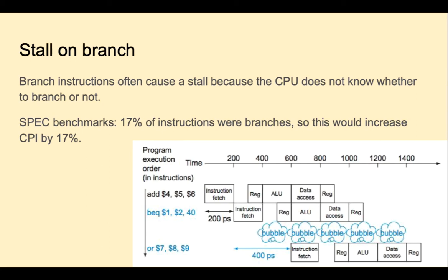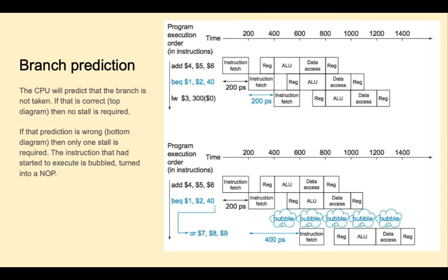Branch instructions often cause a stall. In the spec benchmark programs, 17% of instructions were branches. So this would increase CPI by 17%, even with only one pipeline stall for branch. The simplest form of branch prediction that can be implemented is to always just predict that we're not going to branch. If that's correct, as seen in the top diagram, then no stall is required. And if that's wrong, as shown in the bottom diagram, no harm's done. The instruction that started to execute is bubbled out, essentially turned into a no-op. And then the next clock cycle we restart with the instruction where we should have branched to.